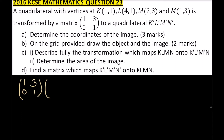You form a matrix using the coordinates of the object. That is: the x-coordinates as the top row — 1, 4, 2, 1 — and the y-coordinates as the bottom row — 1, 1, 3, 3. This matrix has columns K, L, M, and N respectively. When you multiply this transformation matrix by the coordinate matrix, you get the image.